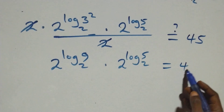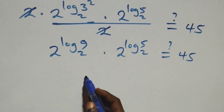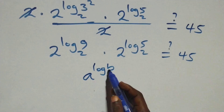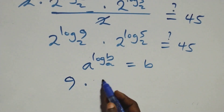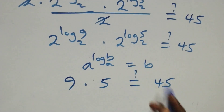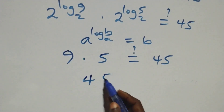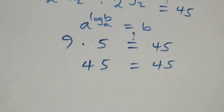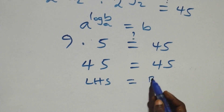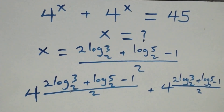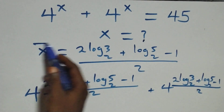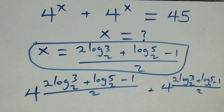This gives 9 times 5, which equals 45. The left-hand side equals the right-hand side, confirming that x equals (2 log₂3 + log₂5 − 1) / 2 satisfies the given problem. Thank you for watching — don't forget to subscribe for more videos, turn on the notification bell, share, leave a thumbs up, and put your comment. See you next class, bye for now.